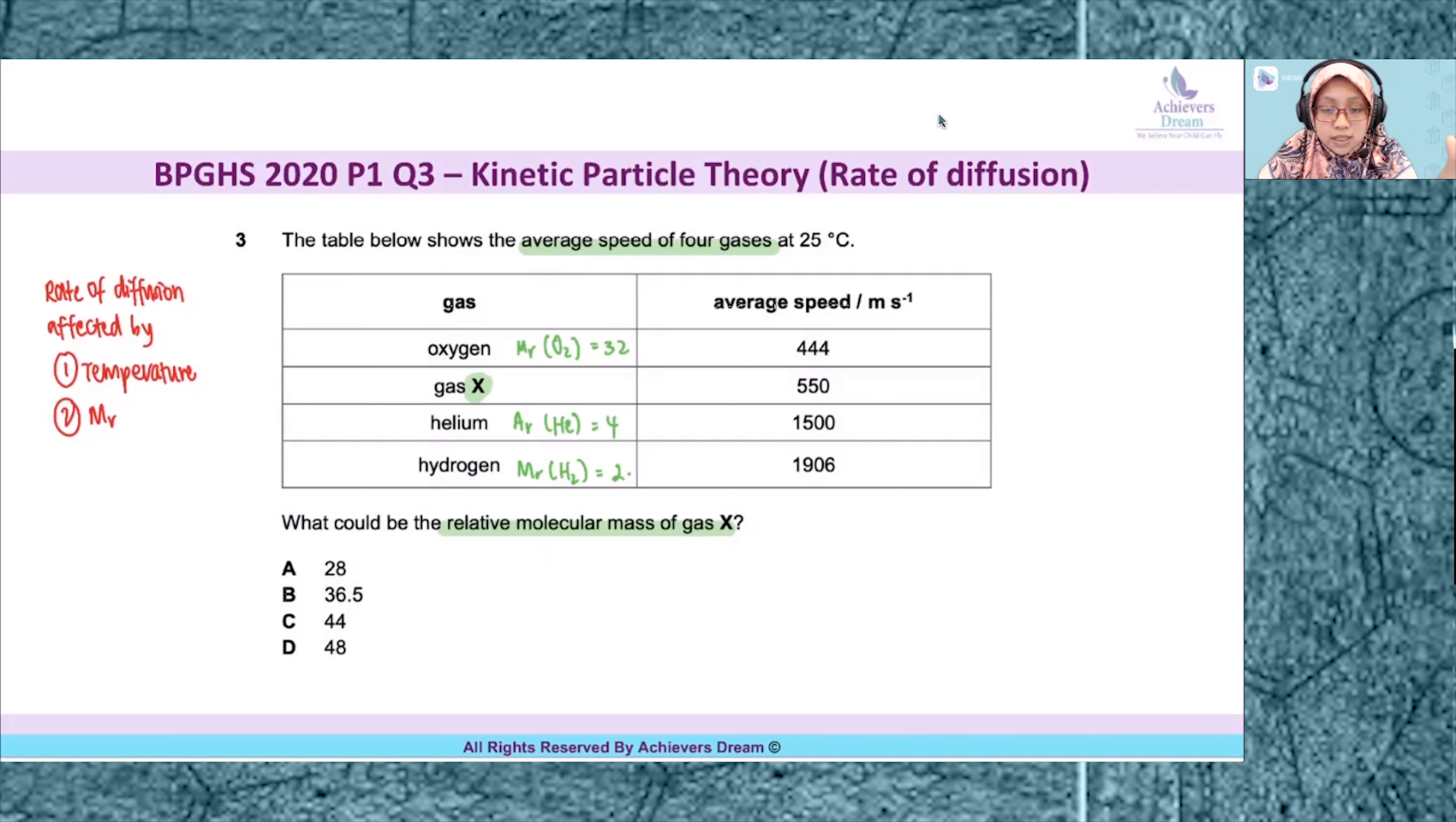When you compare oxygen, helium, and hydrogen, ignore gas X. What can you see? You realize there is a trend: as Mr decreases, or for helium Ar, as Mr decreases, speed increases.